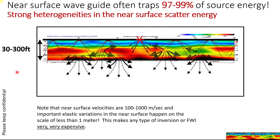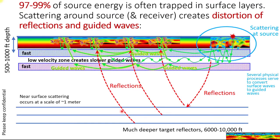Let me explain this full waveform correction process. Here is a heterogeneous near surface, 30 to 300 feet thick — in the Delaware Basin it's actually a little bit thicker. You have strong heterogeneities. Not only is most of the source energy trapped in the near surface, but then it's scattered, which creates a very messy source function. Surface velocities are very slow, and important elastic variations happen on a scale of less than one meter. The scattering occurs at the source, with some multiples near the source, and then the scattering occurs again at the receiver, affecting guided waves and reflections.